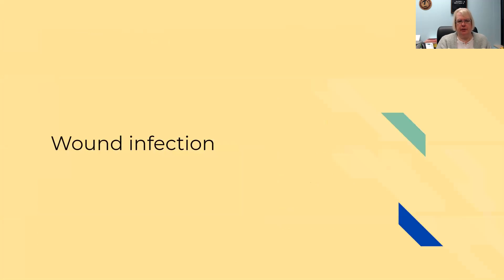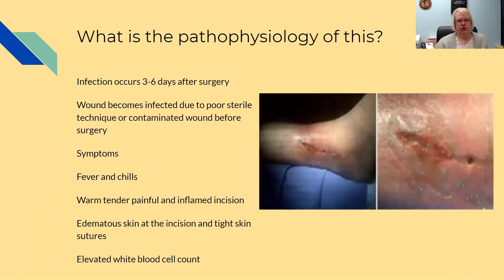Wound infection occurs three to six days after surgery. The wound can become infected due to poor sterile technique or a contaminated wound before surgery. Symptoms are fever, chills, warm, tender, painful, and inflamed incision, edematous skin at the incision, tight skin around the sutures, and an elevated WBC count. A picture of an infected foot wound is shown here.